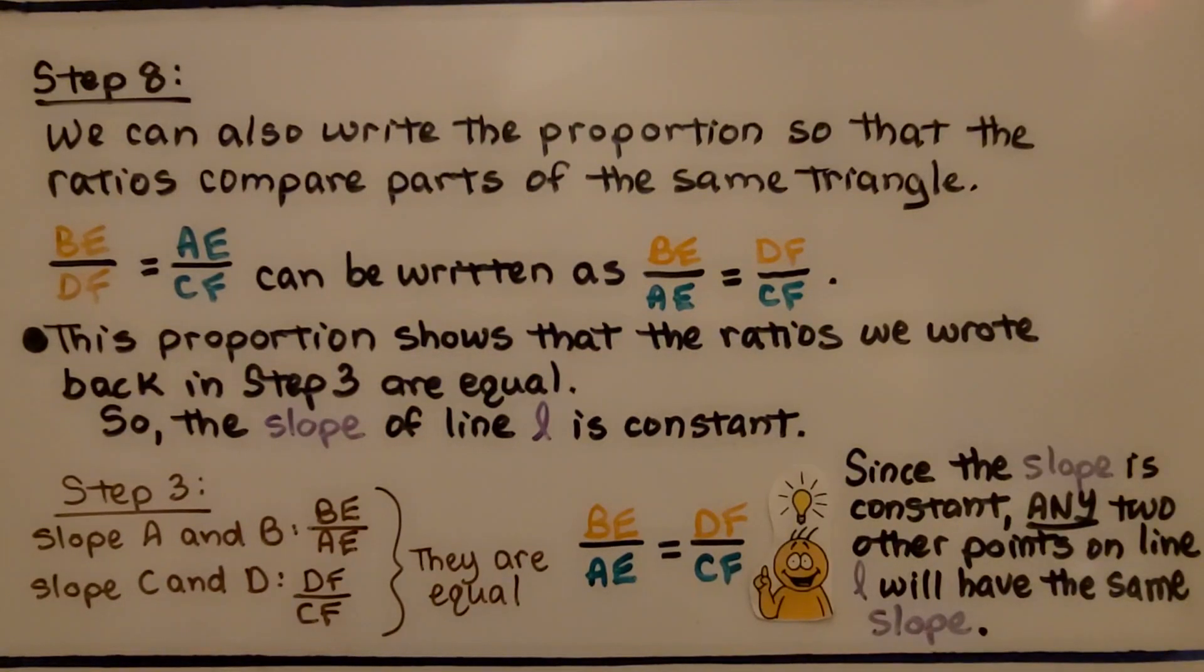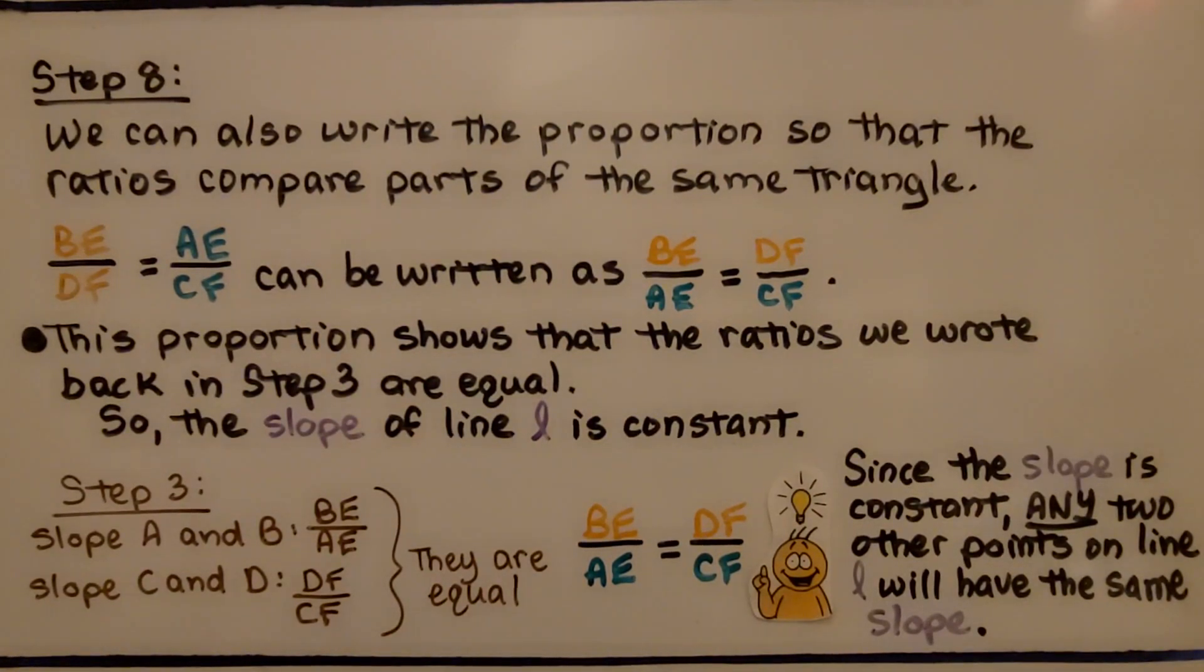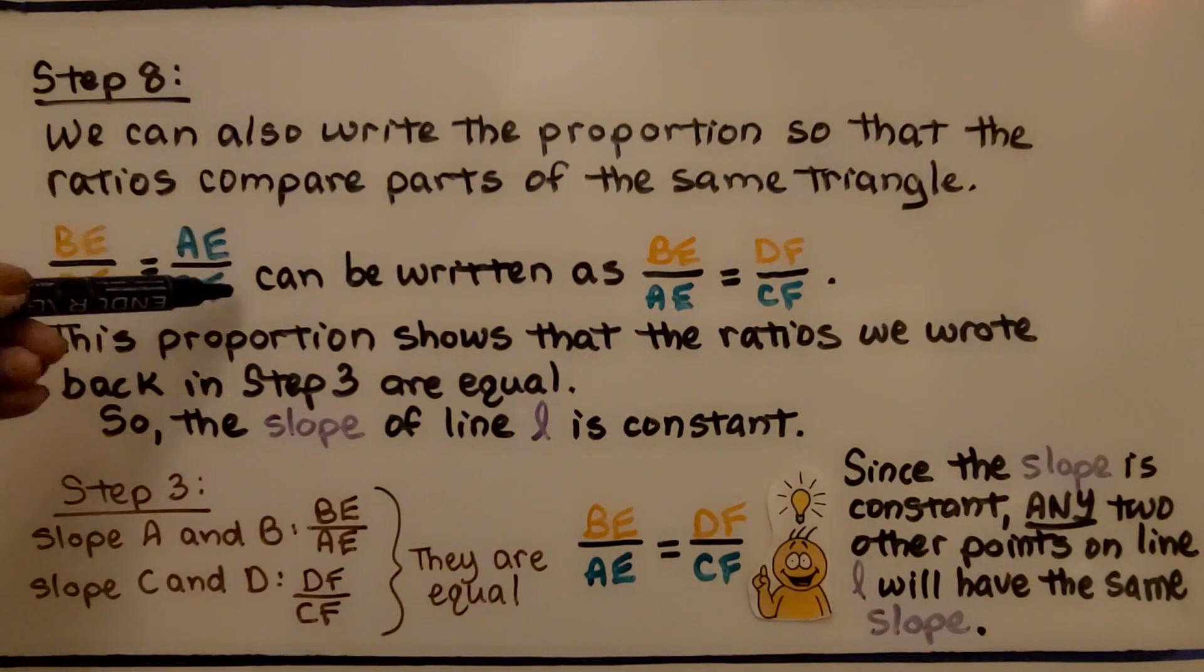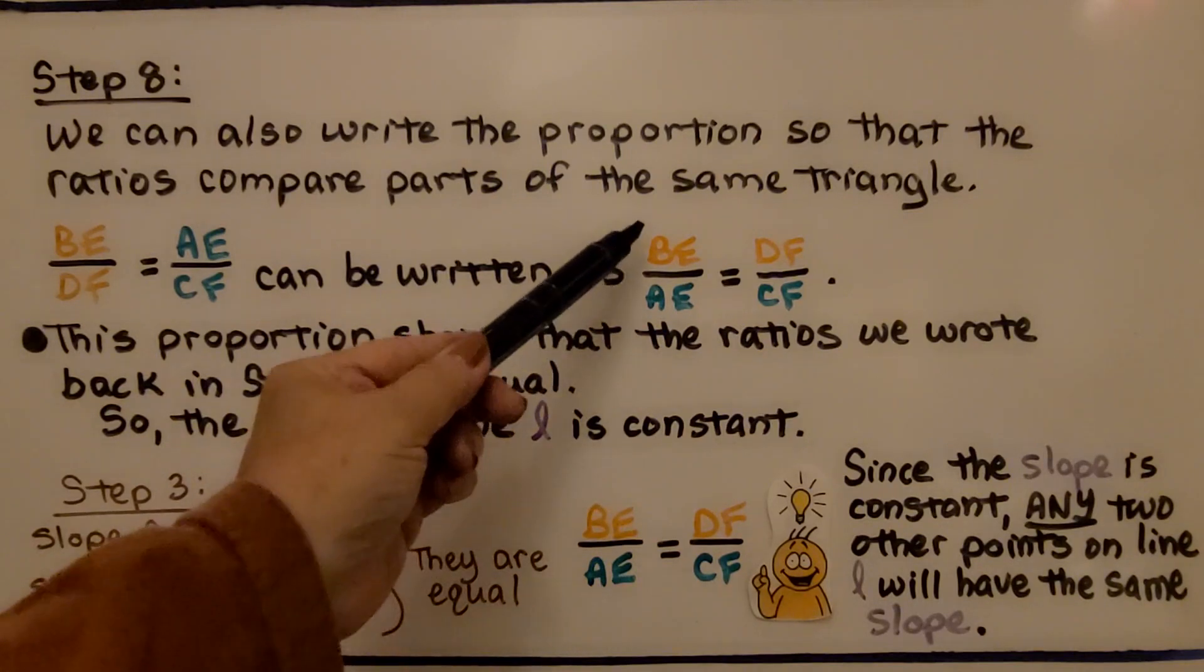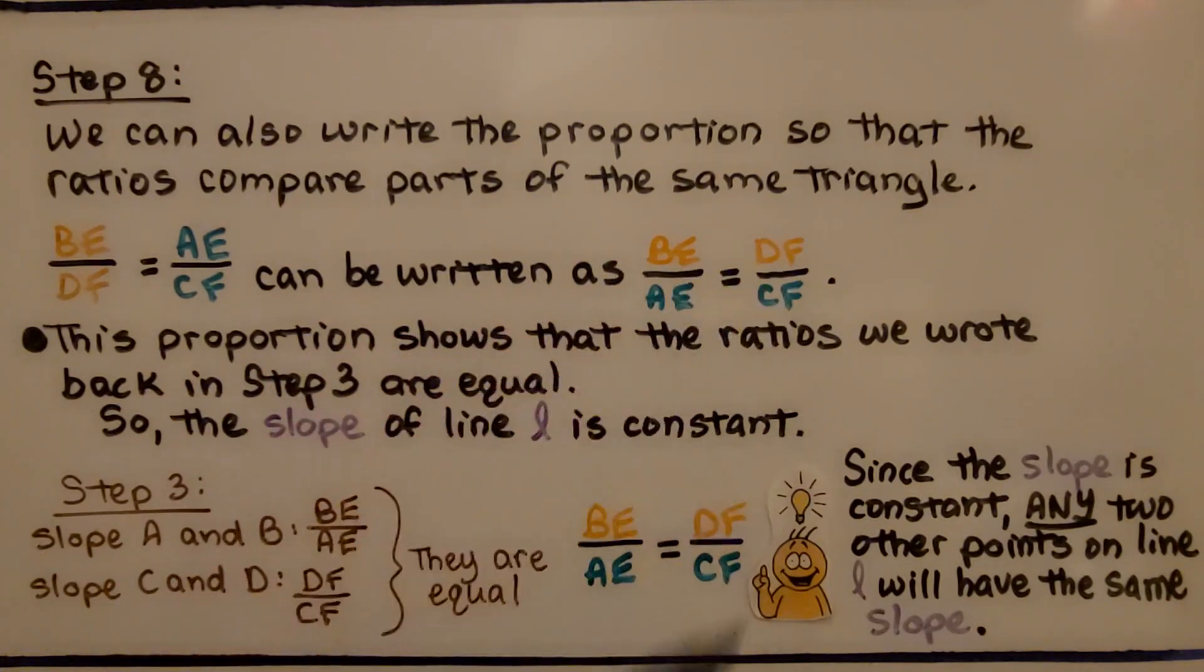For step eight, we can also write the proportion so that the ratios compare parts of the same triangle. We had the two rises and then the two runs. Well, it can be written as the rise over the run, the rise over the run. This proportion shows that the ratios we wrote back in step three are equal. So, the slope of line L is constant.